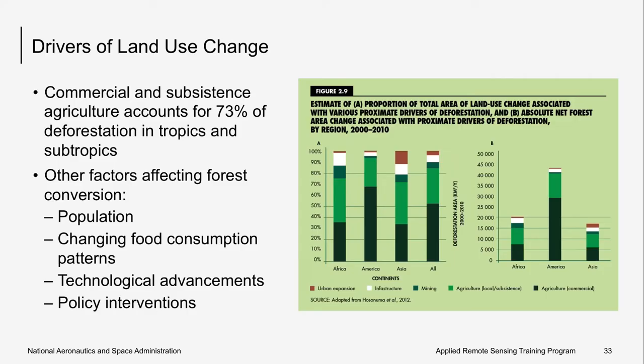This figure shows the proportion of total land use change associated with drivers of change on the left, and the net forest area loss associated with those percentages on the right. Large-scale commercial agriculture accounts for over 70% of deforestation in the tropics and subtropics. Underlying factors affecting forest conversion include population growth, changing food consumption patterns, changing markets, technological improvements, active policy interventions, land tenure security, and the governance of land use change. Forest loss from 2010 to 2015 was offset primarily by a combination of natural expansion, often in abandoned agricultural land, and the establishment of planted forests.